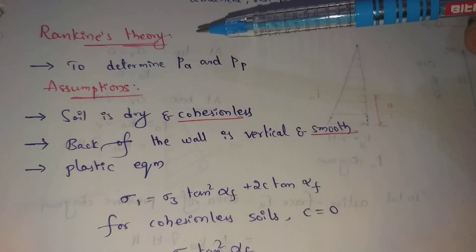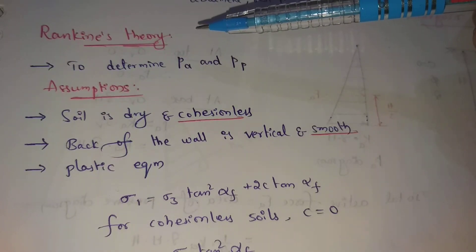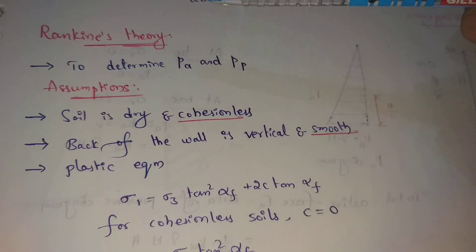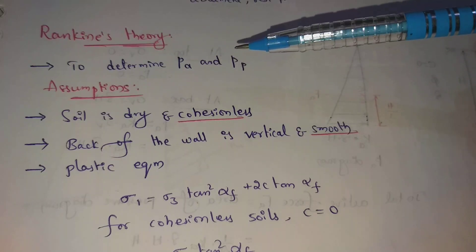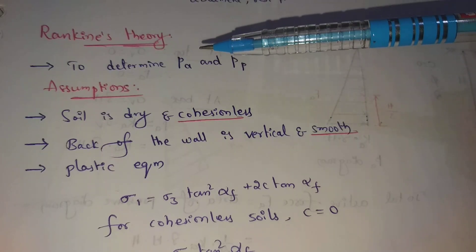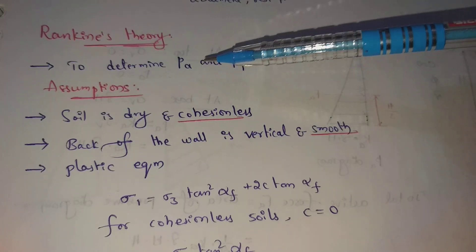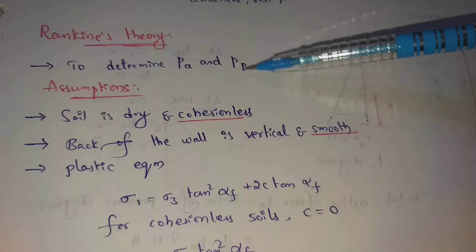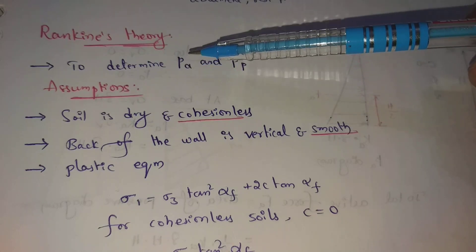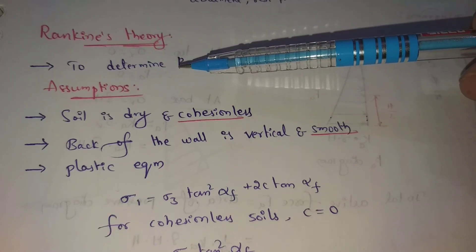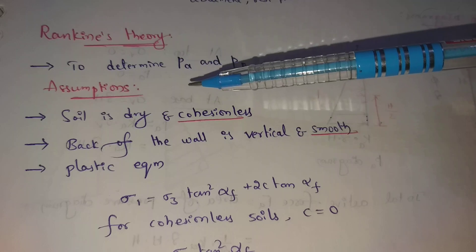Next topic: Rankine's theory. We need to determine PA and PP — that is, active earth pressure and passive earth pressure. In Rankine's theory, there are some assumptions.